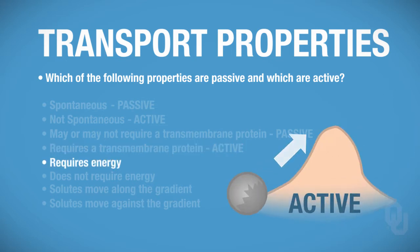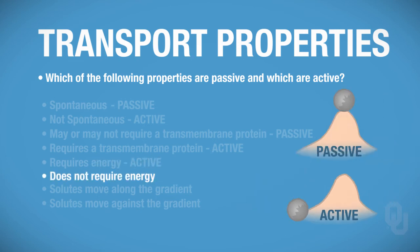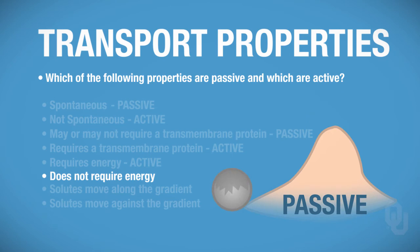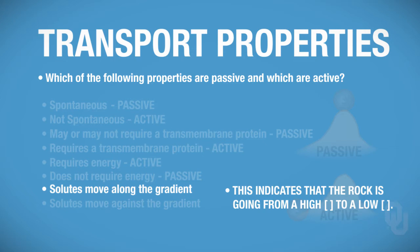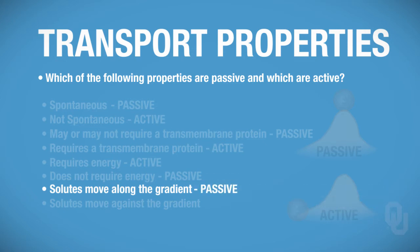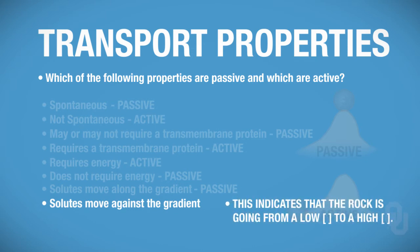Now requiring energy — would it require energy to push that rock up the hill? The answer is yes. So active forms will require energy. Passive forms, on the other hand, don't require any energy; it doesn't take energy for the rock to go down the hill. So passive forms do not require energy. A solute moving along a gradient means going from high concentration toward low concentration — that's a passive process. Solutes that move against a gradient go from low concentration toward higher concentration, and that's an active process.